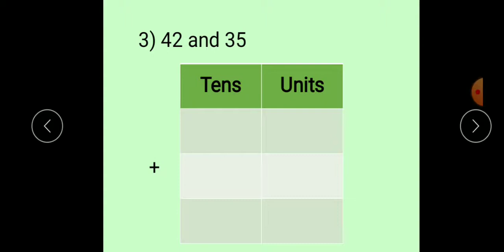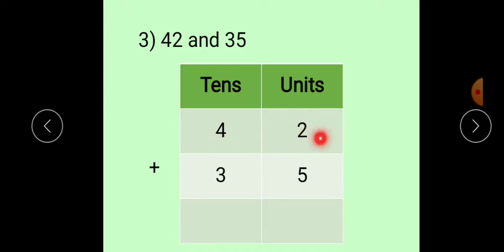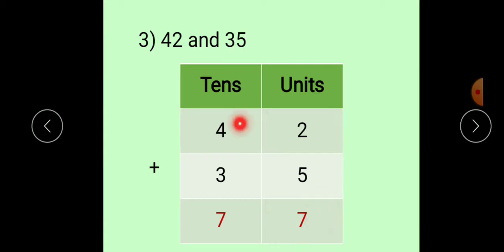Now, see the third example. There is addition of numbers 42 and 35. Again, first of all we have to arrange it vertically. As a two-digit number is given, two places are there: tens and units. First number is 42: 4 is at tens place, 2 is at units place. Write this number, sign of plus. Then, second number is 35: 3 at tens place and 5 at units place. Now, we will add these two numbers. Keep 2 in your mind, take out your five fingers. So, 2 plus 5 equals 7. After that, keep 4 in your mind, take out your three fingers. 4 plus 3 equals 7. So, the answer is 77.